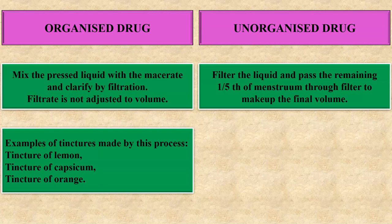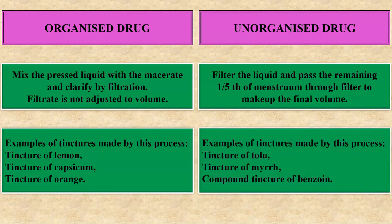Some examples of tinctures made by the organized drug process are tincture of lemon, tincture of capsicum, and tincture of orange. In case of unorganized drug, examples of tinctures made by this process are tincture of belladonna, tincture of myrrh, and compound tincture of benzoin. This was the difference between organized drug and unorganized drug.